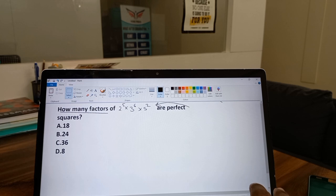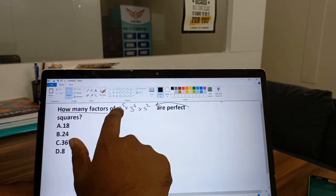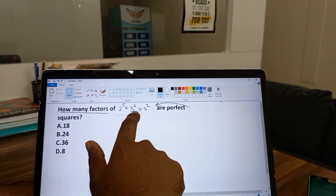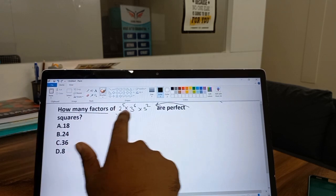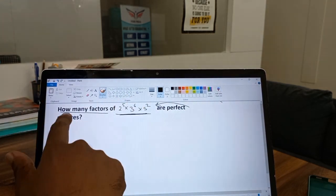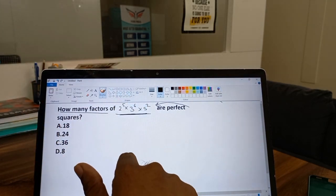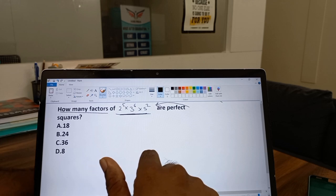Now the question is: how many factors of 2^5 × 3^6 × 5^2 are perfect squares? Out of 18, 24, 36, and 8. I hope you are getting what the question has to say.